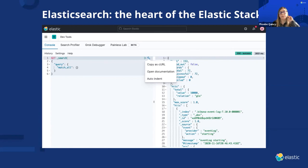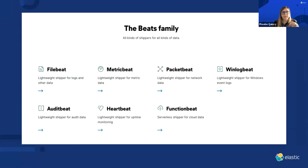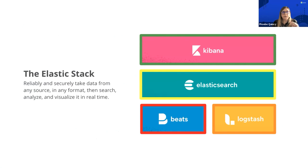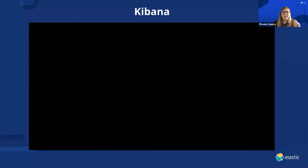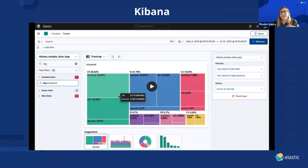Basically, if you just remember that the Elasticsearch portion — that middle green bar — is the search engine that stores the data we're pulling in. Then Kibana is basically the way that we take all of that data and visualize it and display it so that we can pick up patterns and get insights from it.